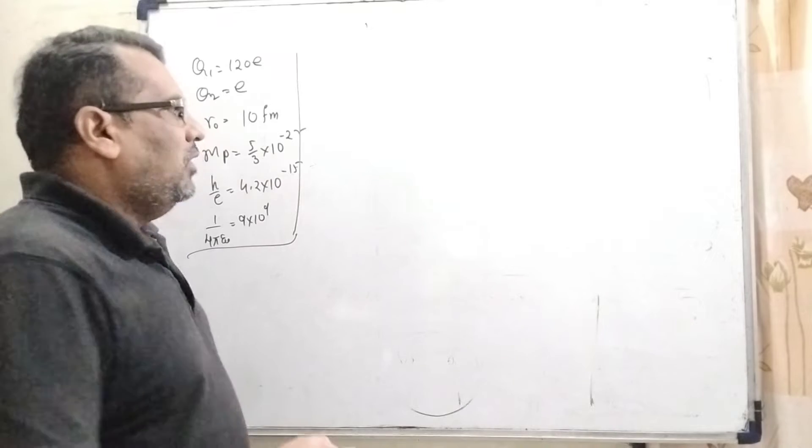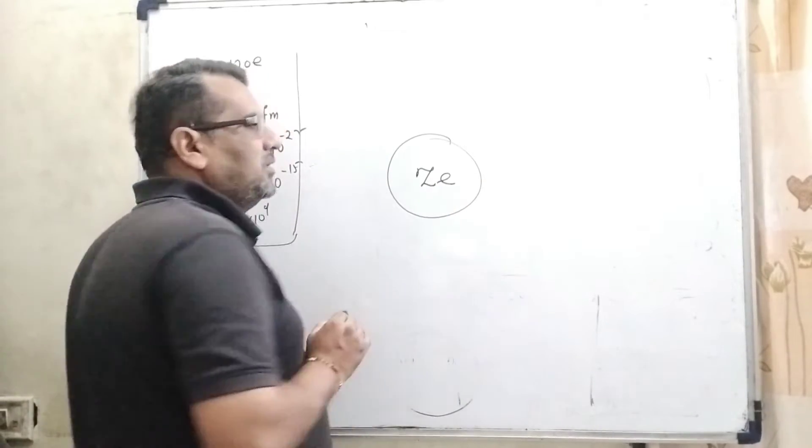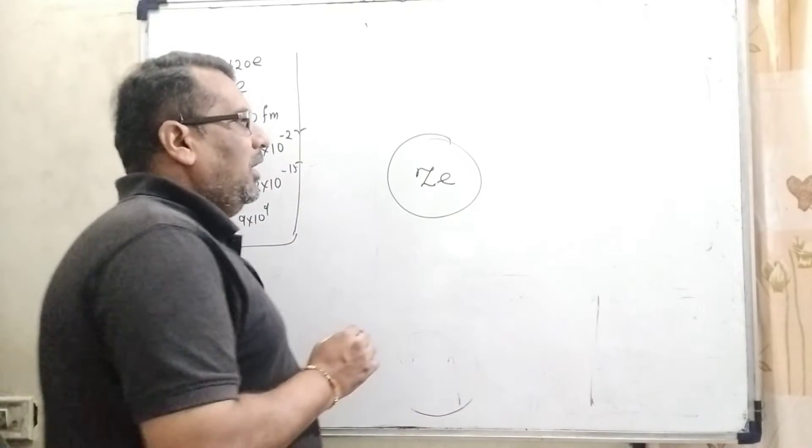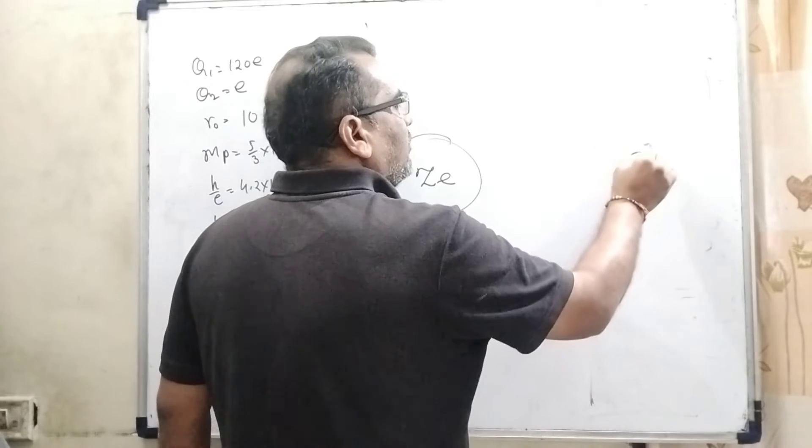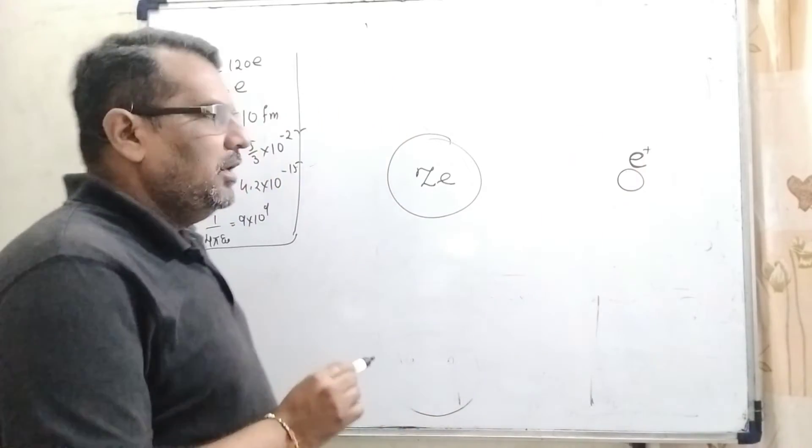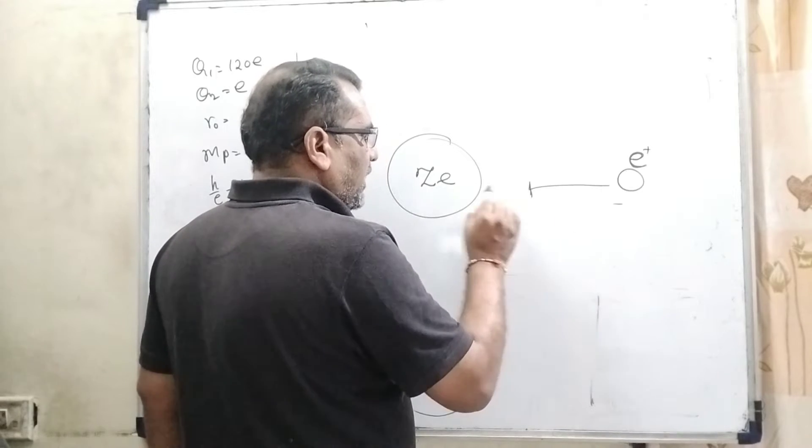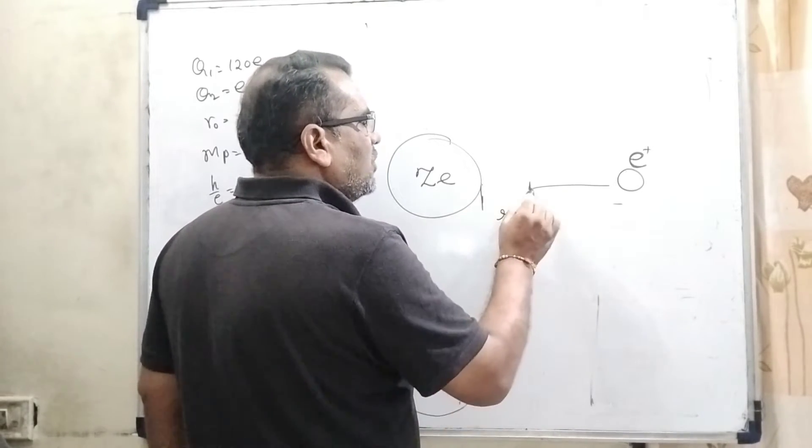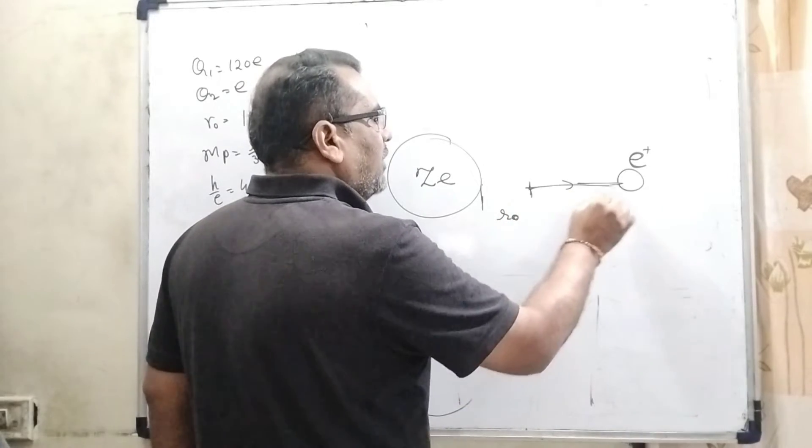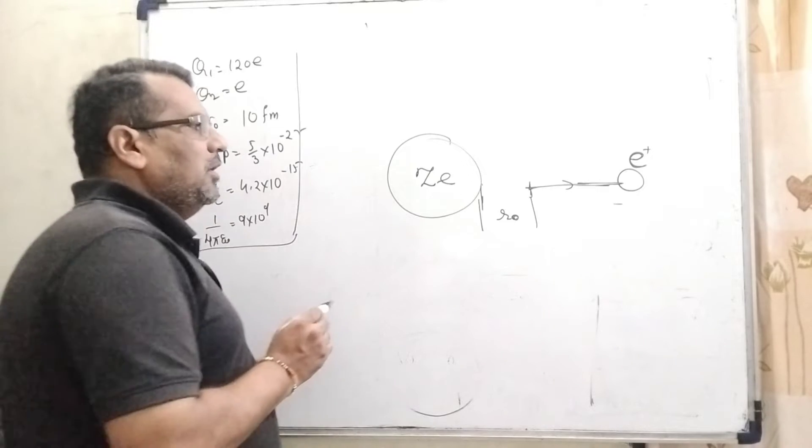Here in the nucleus, total charge is Ze. One proton with charge e positive is fired and reaches up to some certain height. For a moment it stops and retraces again. This distance is called the closest approach.